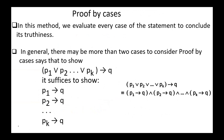Next, proof by cases. In this method, we evaluate every case of the statement to conclude its truthfulness. In general, there may be more than two cases to consider. Proof by cases says that to show P1 or P2 or ... or PK implies Q, this is equivalent to showing P1 implies Q, and P2 implies Q, and ... and PK implies Q.